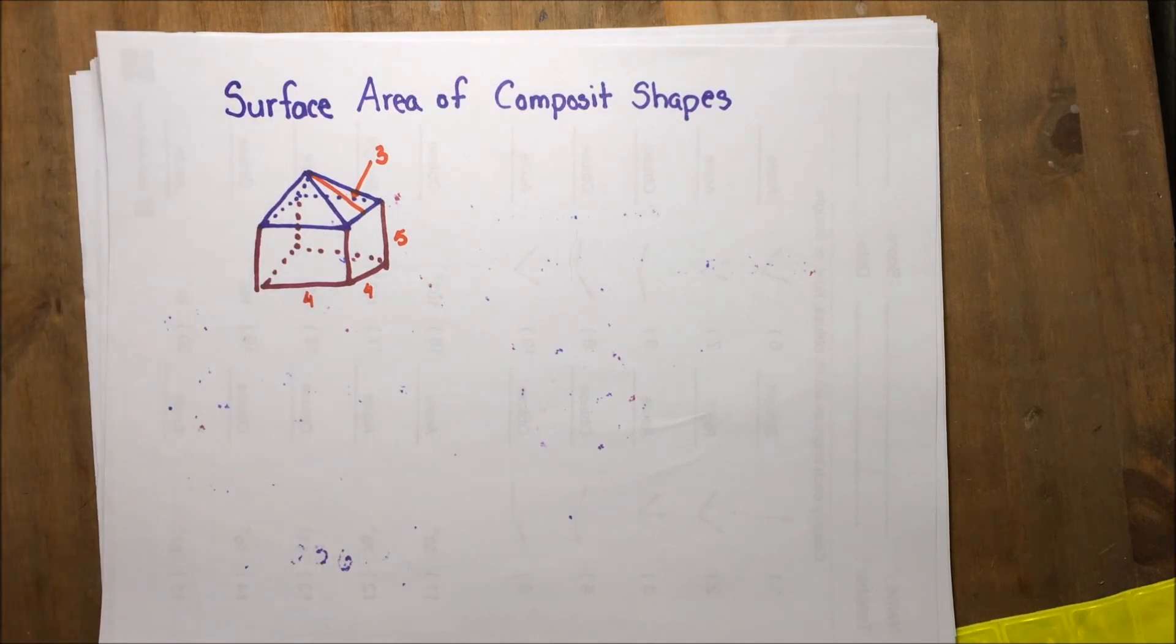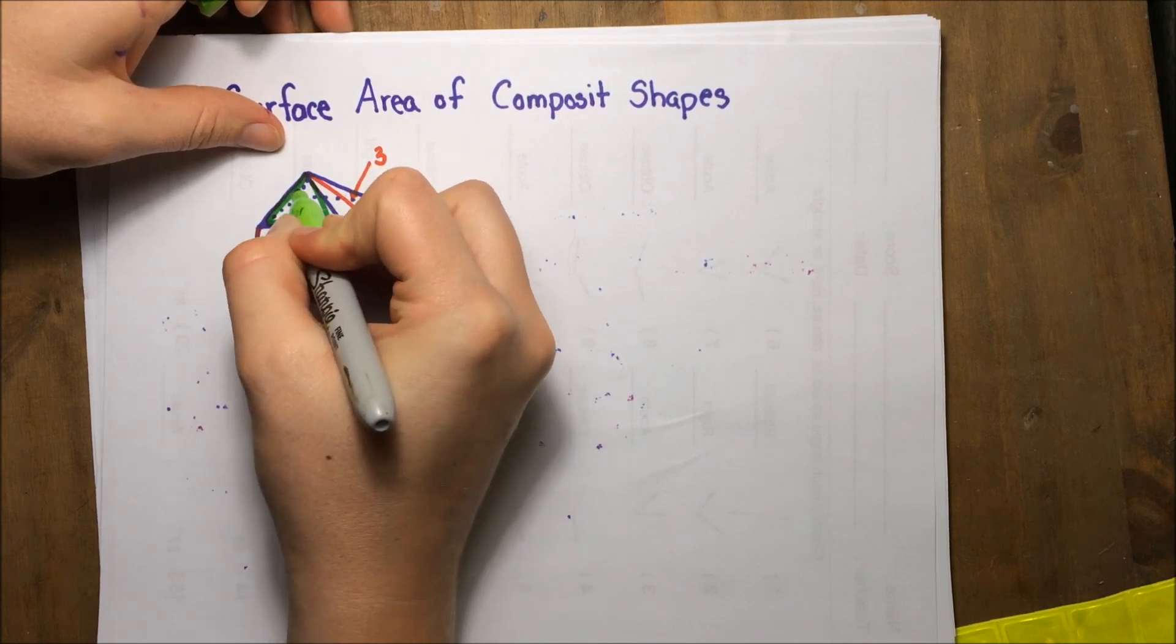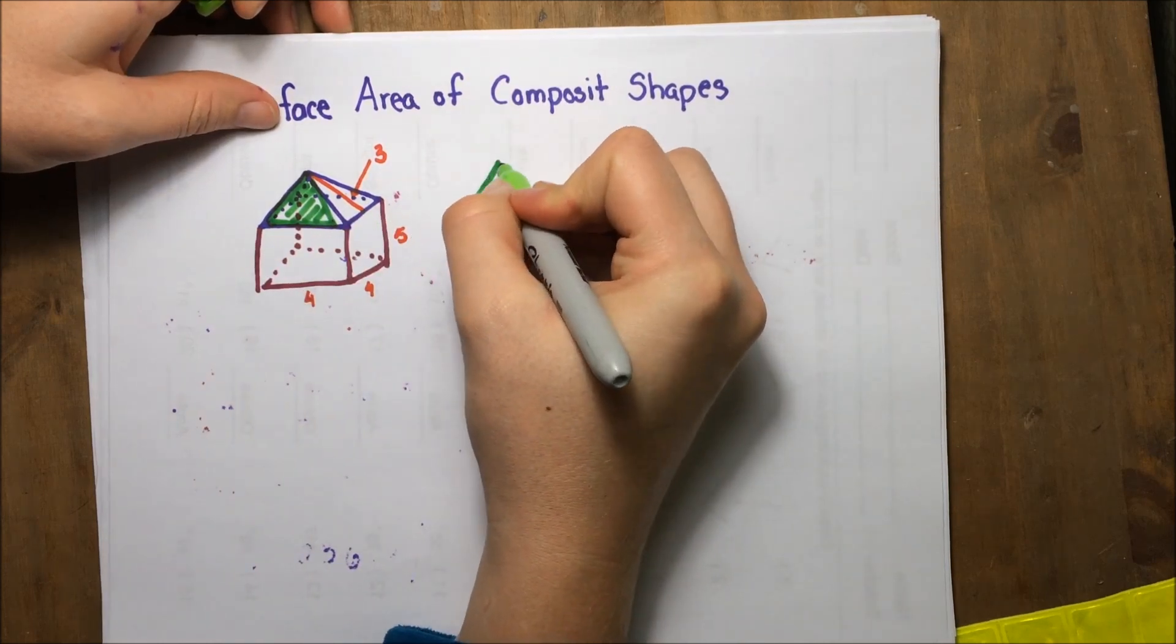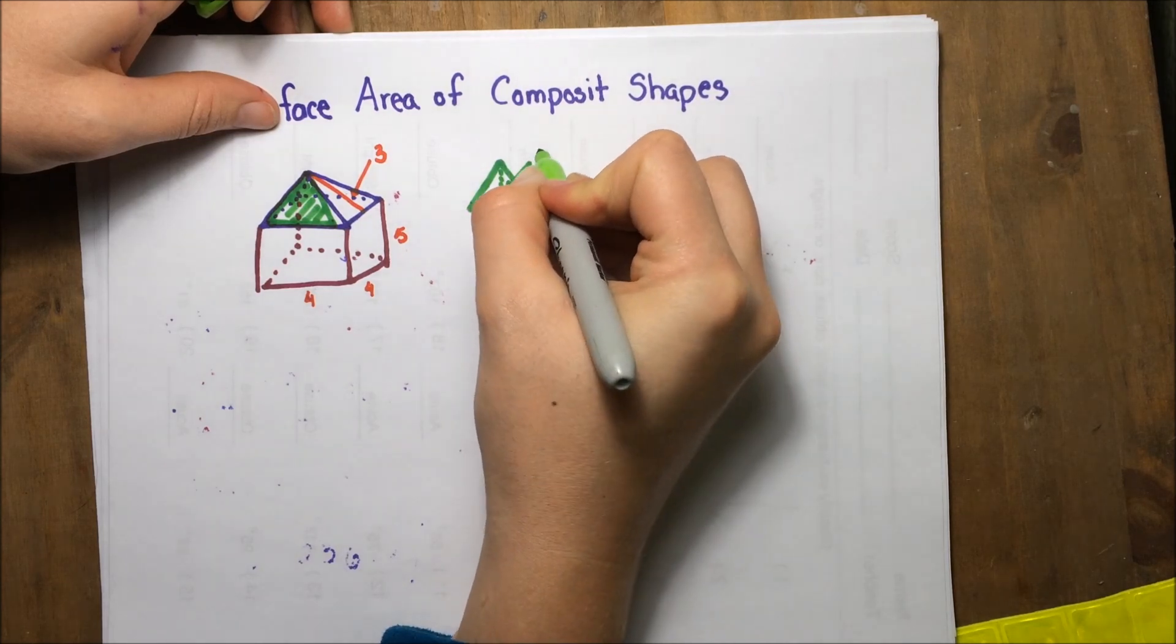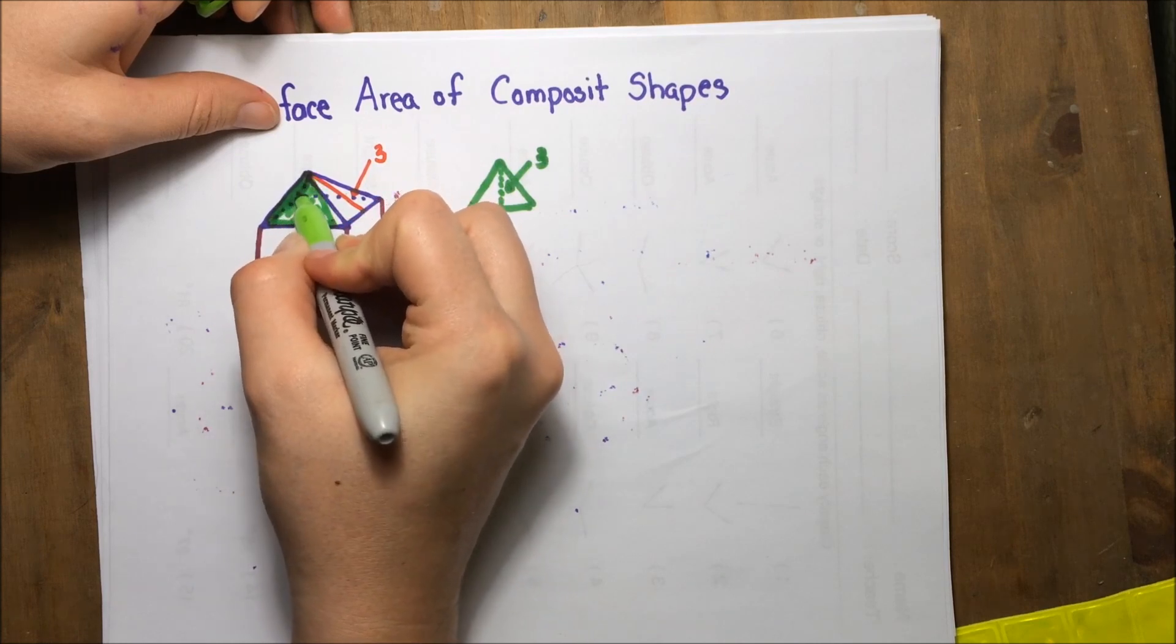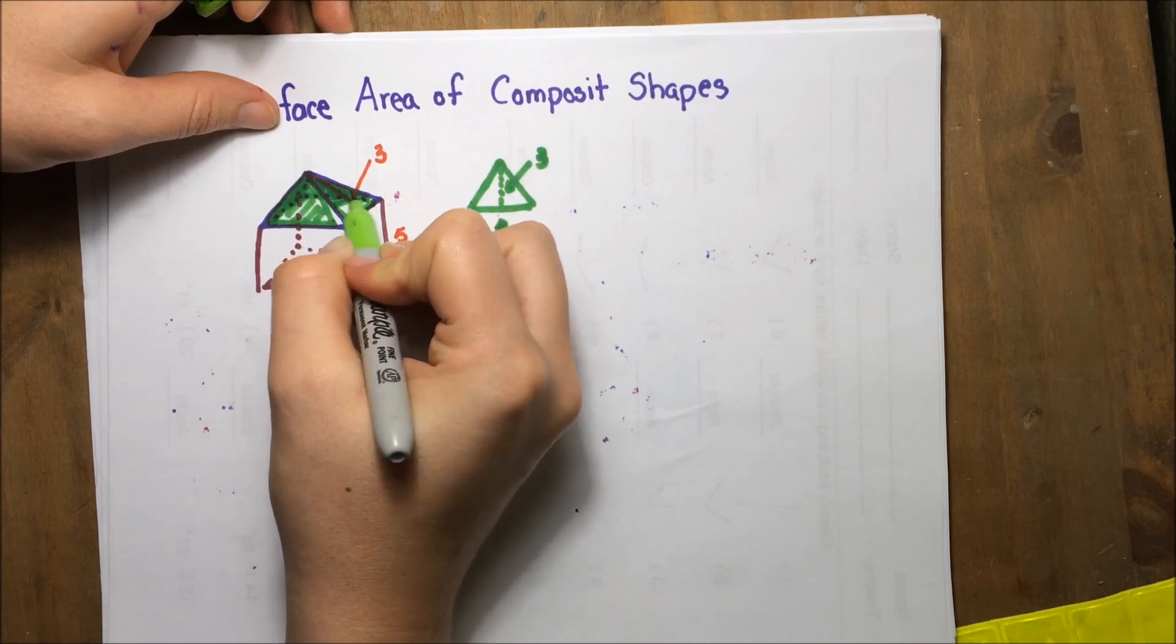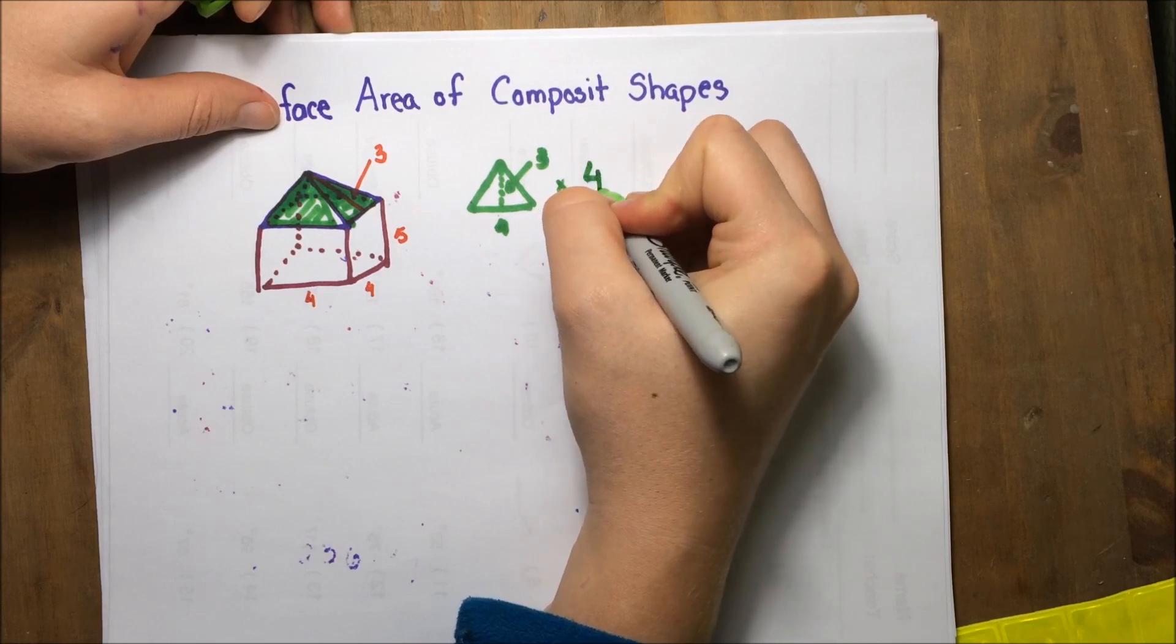I'm going to start with my triangles. You may notice right here, I have a triangle. That triangle has a slant height of three and a base of four. If I count, there's one, two behind it, three in the very back, and four right here up front. So there are four of those shapes.